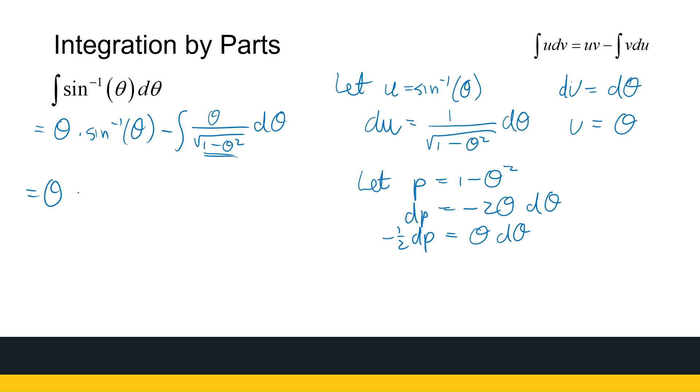So going back to my integral, this first part stays the same. Minus. Then I've got minus 1 half times the integral of 1 over root p dp. So that gives me theta times arc sine theta plus 1 half times the antiderivative of root p. So that's p to the power minus 1 half. So if I add one to that, I get p to the power 1 half. So that's times 2 p to the power 1 half plus c.